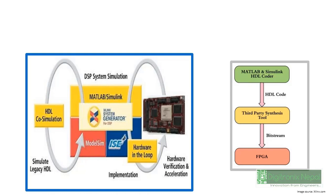We can implement that RTL or HDL netlist with ISE or Vivado Design Suite and implement it on hardware in ISE or Vivado design flow. Another design flow is using MATLAB and Simulink with HDL Coder. HDL Coder is a program which converts MATLAB and Simulink projects into HDL format, so we can synthesize those projects, implement them, and generate bitstreams to implement on hardware.